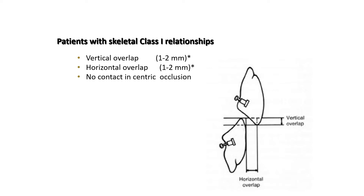For the patient with skeletal class 1 relation, we have three skeletal classifications: class 1, which is normal where the upper overlaps the lower; class 2, where the upper is more prominent than the lower; and the reverse relation, which is class 3. We usually work with the normal class 1 relationship.